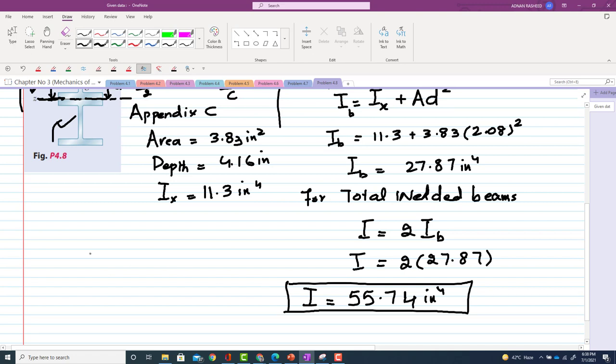Now we have I. As we know, this moment about z is equal to sigma into I divided by c. Again, this is allowable stress. From the previous problem, sigma allowable will be equal to sigma ultimate divided by factor of safety, which is equal to 58 divided by 3, and that will be equal to 19.33 ksi.